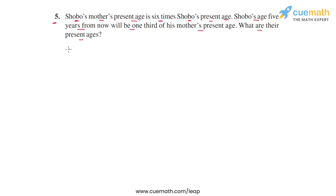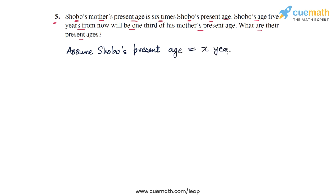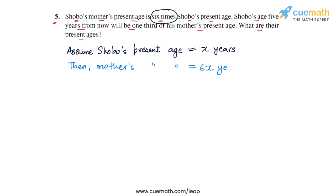Let's assume that Shobo's present age is x years. In terms of x, we can also write Shobo's mother's present age, which is six times Shobo's present age. So the mother's present age will be six x years.